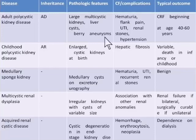The possible causes of death in these patients are either chronic renal failure, or rupture of the berry aneurysm causing intracranial hemorrhage or subarachnoid hemorrhage leading to death.